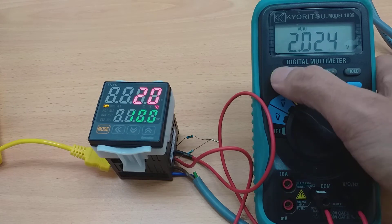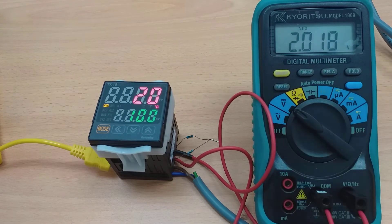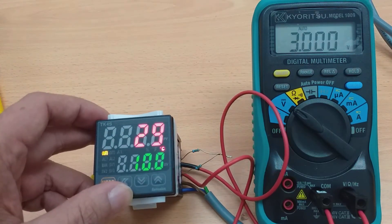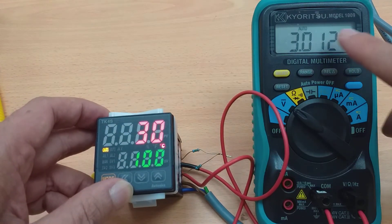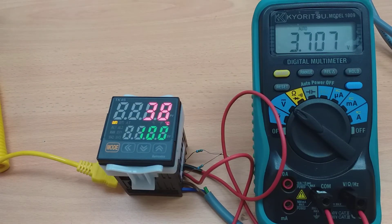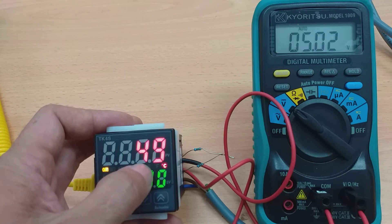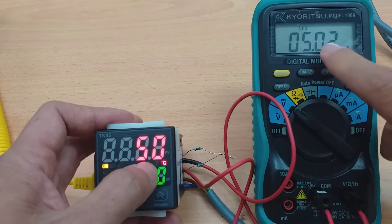20°C is equal to 2 volt. I raise up. 30, equal to 3 volt. 50°C equal to 5 volt.